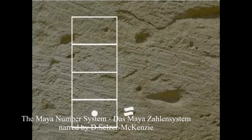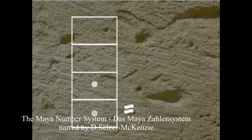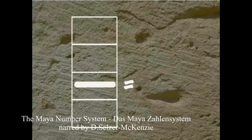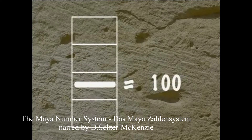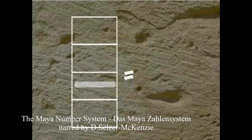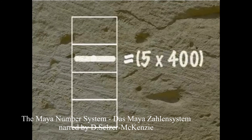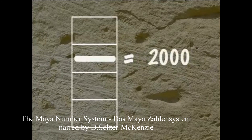Each dot in the ones place is worth 20 to the 0 power, or 1. Each dot in the 20s place is worth 20 to the first power, or 20. And because 5 dots are equal to 1 bar, each bar in that place is worth 5 times 20, or 100. As we move up the place value ladder, 1 dot is worth 20 times the value of a dot in the lower place value. The value of a dot in the third place is 20 squared, or 400, and a bar in that place is worth 5 times 400, or 2,000.